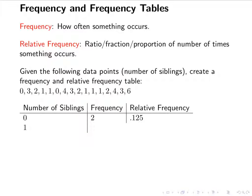The number of people who have 1 sibling is 5. There are 5 ones, and 5 divided by 16 is 0.3125. The number of people that have 2 siblings is 3, and 3 divided by 16 is 0.1875. The number of people with 3 siblings is also 3, so the relative frequency is the same.